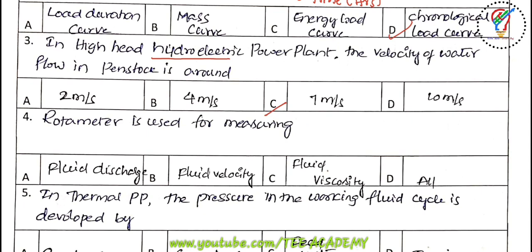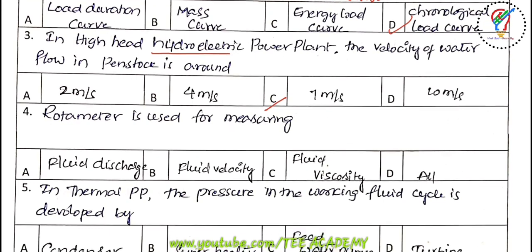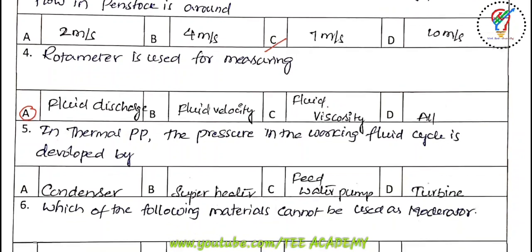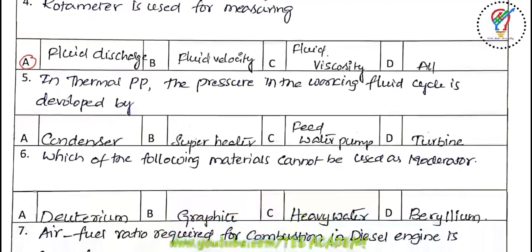Fourth question: the rotameter is used for measuring fluid discharge. This is an important question for those preparing for GRAMO or similar volume exam machines, so this bit is also likely to be asked.